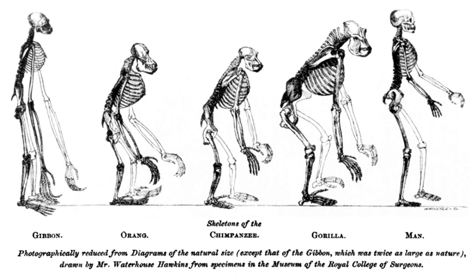In Essai de Cosmologie, Maupertuis noted: "May we not say that, in the fortuitous combination of the productions of nature, since only those creatures could survive in whose organizations a certain degree of adaptation was present, there is nothing extraordinary in the fact that such adaptation is actually found in all these species which now exist. Chance, one might say, turned out a vast number of individuals; a small proportion of these were organized in such a manner that the animals' organs could satisfy their needs. A much greater number showed neither adaptation nor order; these last have all perished. Thus the species which we see today are but a small part of all those that a blind destiny has produced."